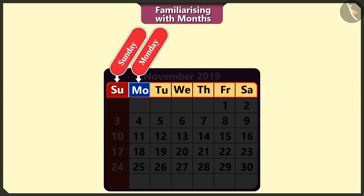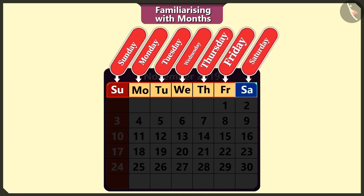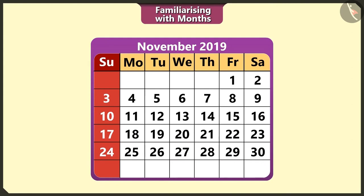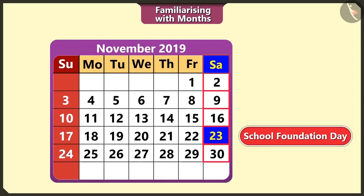Like Sunday, Monday, Tuesday, Wednesday, Thursday, Friday and Saturday. A group of these 7 days is called a week. To find the day of a date, look at the weekday name column in the calendar. In whichever weekday column a date falls, it is that day. 23rd is showing in the Saturday column in November, so 23rd November is a Saturday. The school foundation day will be celebrated on Saturday.